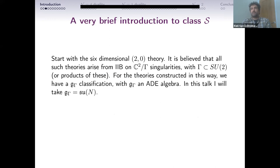Let's start with Class S, just to set the stage. You start with the six-dimensional (2,0) theory. We believe all such theories arise from Type IIB on ALE singularities, where gamma is a discrete subgroup of SU(2). In this talk, I will always talk about the SU(N) case, so gamma is simply the cyclic group Z_N.